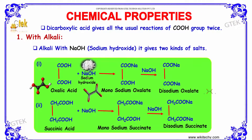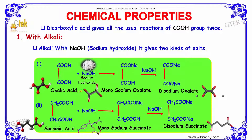Dicarboxylic acids give all the usual reactions of the COOH group twice. That is, with alkali NaOH it gives two kinds of salts. When oxalic acid reacts with sodium hydroxide it produces monosodium oxalate. On further addition of sodium hydroxide it produces disodium oxalate. Whereas succinic acid when added with sodium hydroxide produces monosodium succinate.